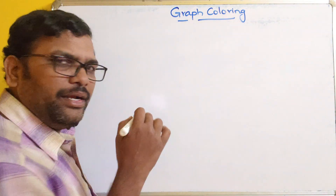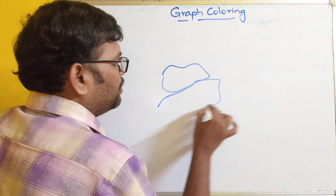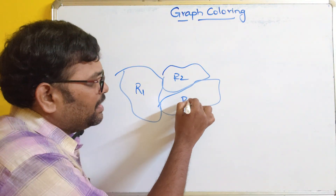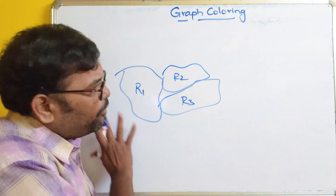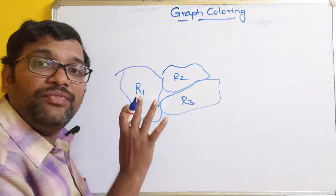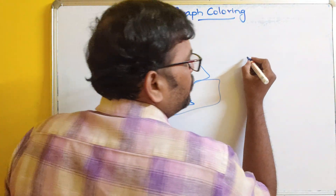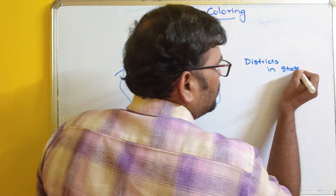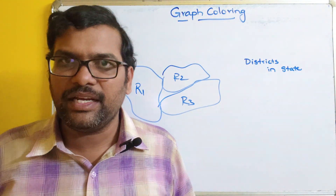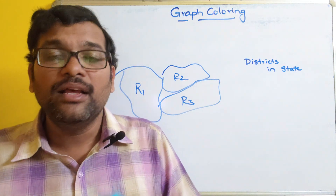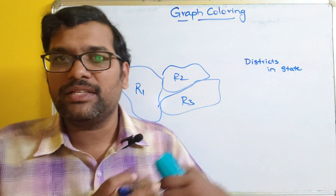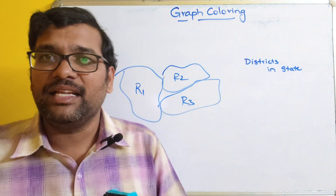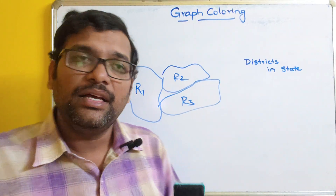For example, consider two or three regions — R1, R2, and R3. If you color all regions with a single color, you are unable to identify the boundaries of these regions. For example, consider districts in a state. A state has multiple districts and a country has different states. In order to differentiate one state from another, no two adjacent states should be filled with a similar color. If you fill the same color for adjacent states, you can't identify the region boundaries.